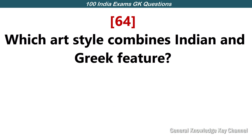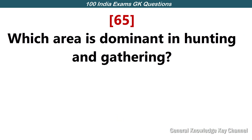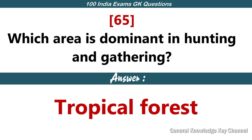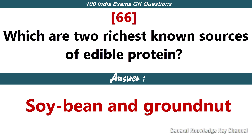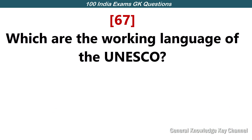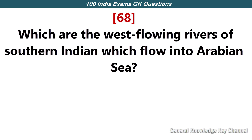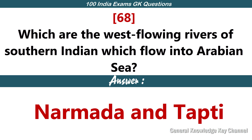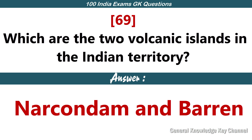Which art style combines Indian and Greek features? Gandhara. Which area is dominant in hunting and gathering? Tropical forests. Which are the two richest known sources of edible protein? Soya bean and groundnut. Which are the working languages of UNESCO? English and French. Which are the west-flowing rivers of southern India that flow into the Arabian Sea? Narmada and Tapti. Which are the two volcanic islands in Indian territory? Narcondam and Barren.